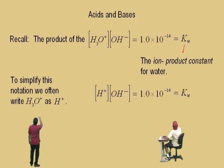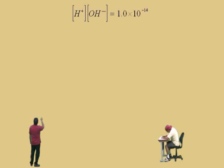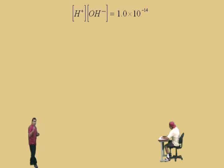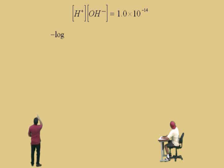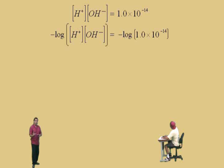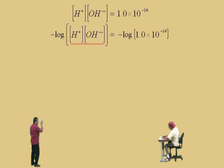Recall, the product of the hydrogen and hydroxide ion concentrations will always equal 1.0 times 10 to the negative 14th. With this, we can get a relationship with something called pH and pOH — we're going to talk about the p-scale and what the p actually means. In previous lectures we were doing logarithms, so what we're going to do is take the negative log of both sides. The negative log of the left-hand side equals the negative log of the right-hand side. From math class, remember the log of a product is the sum of the logs.